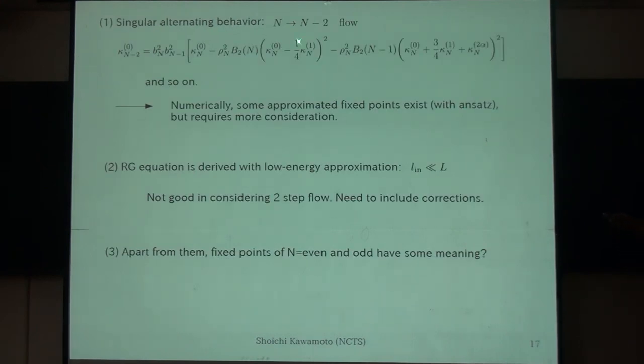So, this leads us to consider this N to N-2 flow, which means that, in this case, you may stay in even case or either odd case and go to infinity. You can write down RG equations in this way as well. So far, some approximate fixed points can be found with even and odd, but it's still a numerical approximated result. So, it's not a good starting point for the perturbative study.